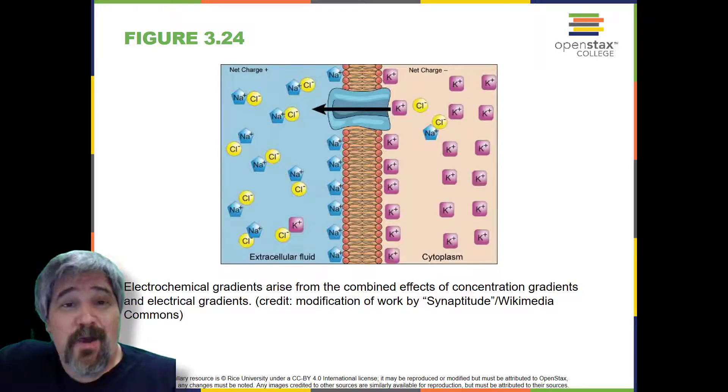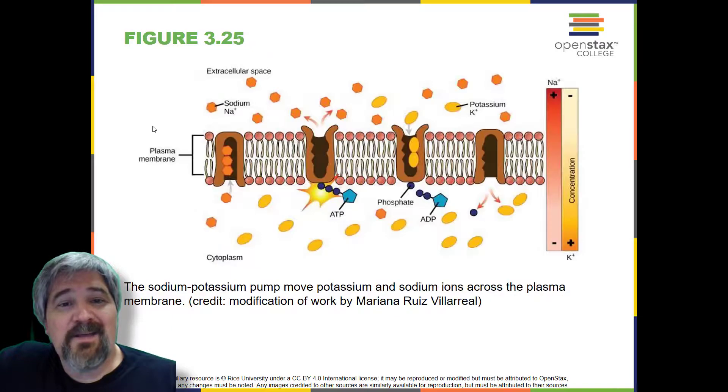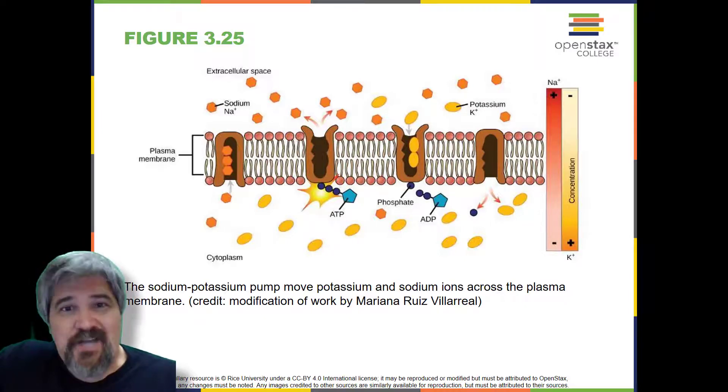Moving against a gradient. To move substances across a concentration or an electrochemical gradient, the cell must use energy. This energy is harvested from ATP that is generated through cellular metabolism. Active transport mechanisms, collectively called pumps or carrier proteins, work against electrochemical gradients. With the exception of ions, small substances constantly pass through the plasma membrane.